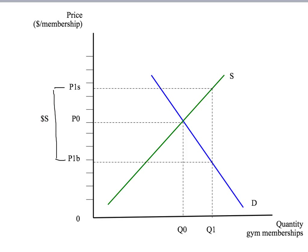Let's check that that's an equilibrium. Given the price that sellers receive, by the supply curve, they would like to supply Q1 memberships. Given the price that buyers pay, given by the demand curve, buyers would like to buy Q1 memberships. So our sellers' plans and our buyers' plans coincide. That's an equilibrium with our sellers' price exactly above our buyers' price by our subsidy.